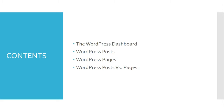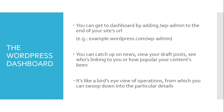To begin with, let us gain knowledge about the WordPress dashboard. The dashboard, that is wp-admin, is the first screen you see when you log into the administration area of your blog. You can get to the dashboard by adding forward slash wp-admin to the end of your site's URL. In the dashboard area, you can catch up on news, view your draft posts, see who is linking to you or how popular your content has been. Basically, it is like a bird's eye view of operations, from which you can swoop down into the particular details.